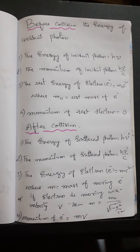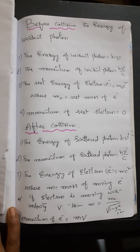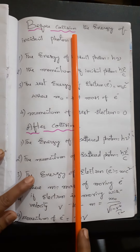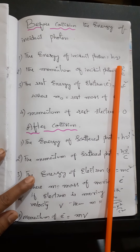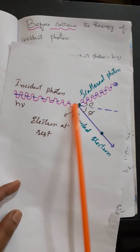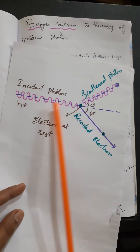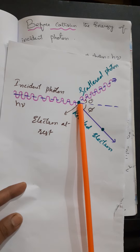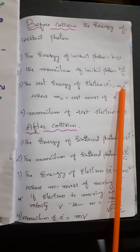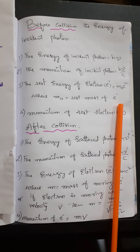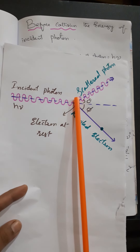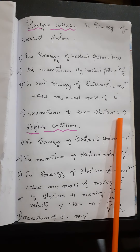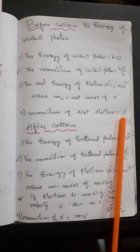Now we apply the law of conservation of energy and momentum before and after the collision. Before the collision: the energy of the incident photon is h·nu, and its momentum is h·nu/c. The rest energy of the electron is m₀c², where m₀ is the rest mass of the electron, and the momentum of the electron at rest is zero.